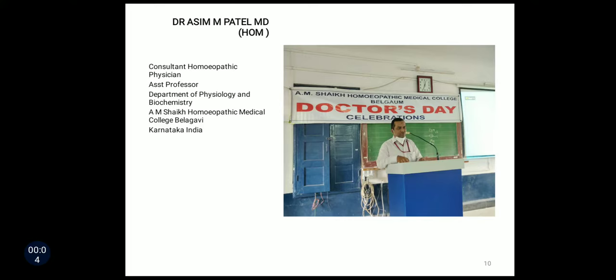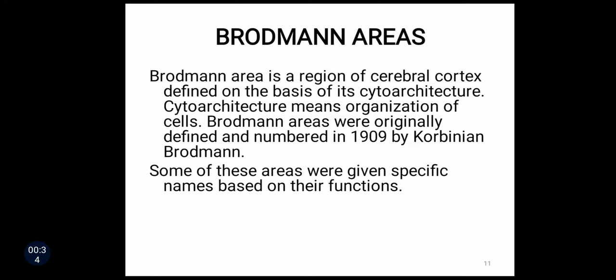Good morning all. We will continue with cerebral cortex. In the previous class we studied about the various lobes of cerebral cortex and histology of cerebral cortex. Now we will discuss the Brodmann's areas on the cerebral cortex. There are various areas in the cerebral cortex which are specific for their function, and these areas are named by Brodmann, which is why they are called Brodmann's areas. A Brodmann area is a region of cerebral cortex defined on the basis of its cytoarchitecture, meaning organization of cells. Brodmann areas were originally defined and numbered in the year 1909 by Corbinian Brodmann. Some of these areas were given specific names based on their functions.